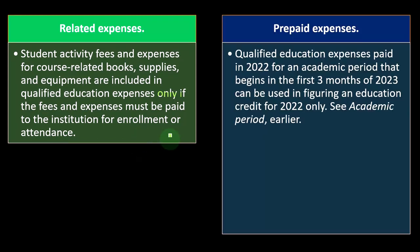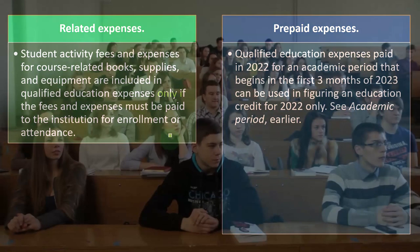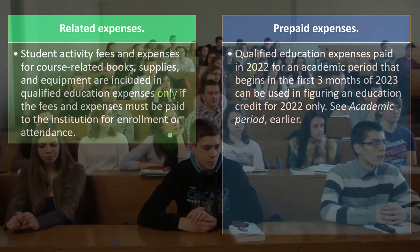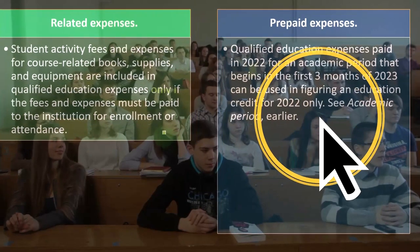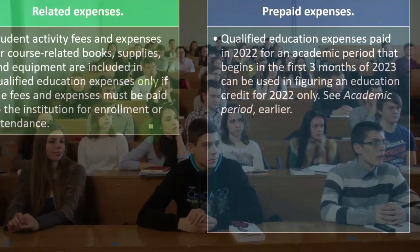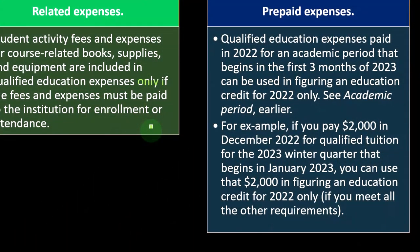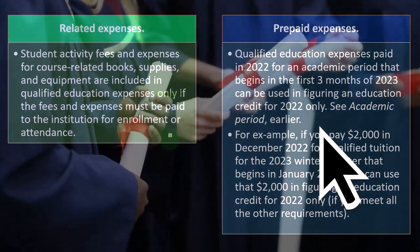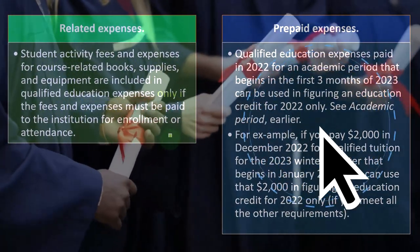Prepaid expenses: qualified education expenses paid in 2022 for an academic period that begins in the first three months of 2023 can be used in figuring an education credit for 2022 only. For example, if you pay $2,000 in December 2022 for qualified tuition for the 2023 winter quarter that begins in January 2023, you can use that $2,000 in figuring an education credit for 2022 only, if you meet all other requirements.